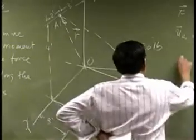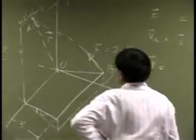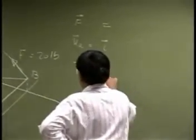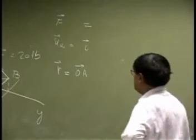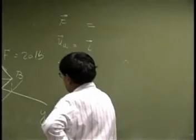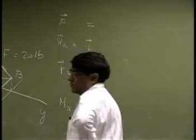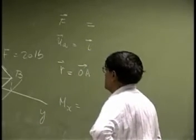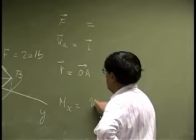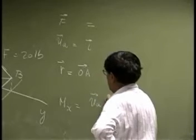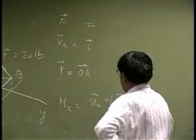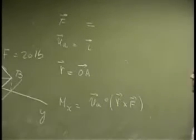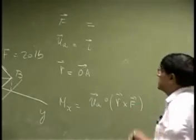So we are going to have R, really a vector going from O to A. And then your moment, which is MX, that is going to be U_A dot R cross F. So we need to find all these vectors and then work through this equation.